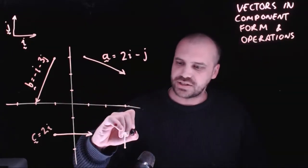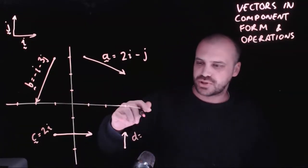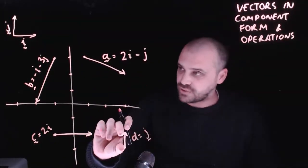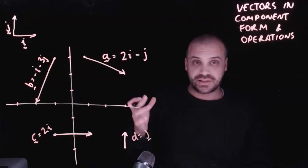And finally, this vector here, this vector d, it's moving one up. So we can say it's just simply vector j. In fact, that vector is equal to that vector. That is vector j.